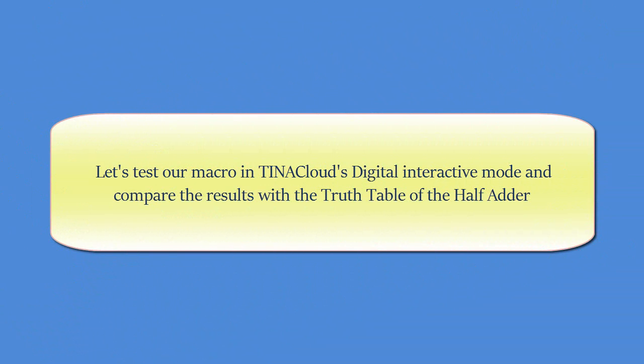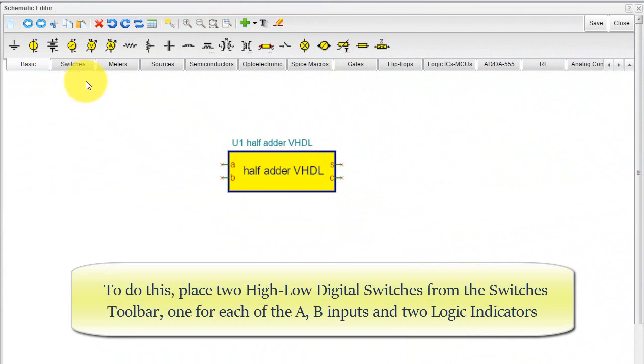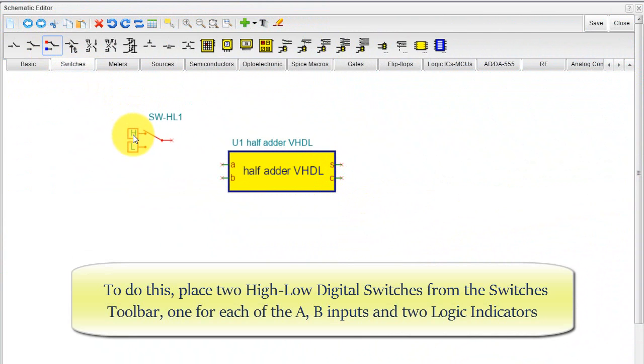Let's test our macro in Tina Cloud's digital interactive mode, and compare the results with the truth table of the half adder. To do this, place two high-low digital switches from the switches toolbar, one for each of the A-B inputs, and two logic indicators.